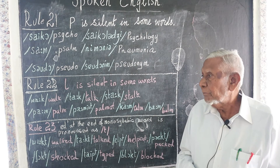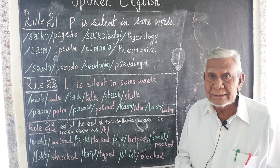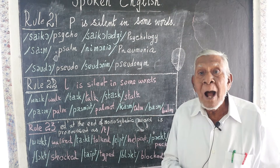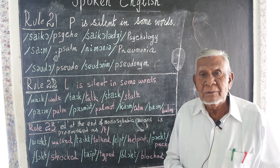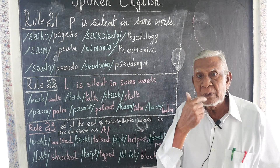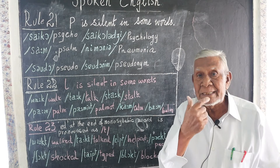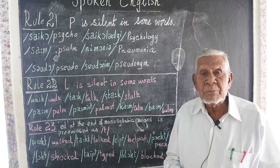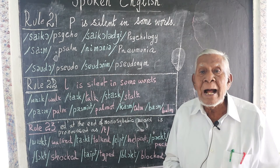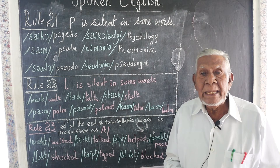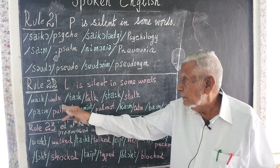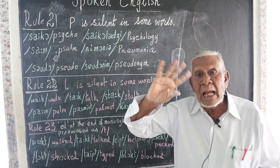The alphabet L is silent in some English words. For example, walk. Whenever you find a W, you must have your lips rounded — W must be pronounced with rounded lips. Walk — W-A-L-K. We write L but we don't pronounce it.